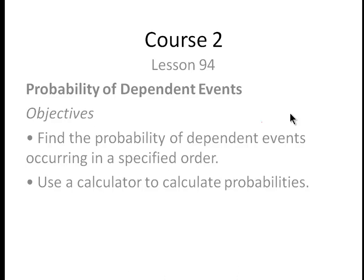Welcome to lesson 94 of Saxon Math course 2. In this lesson we're going to deal with the probability of dependent events. We're going to find the probability of dependent events occurring in a specific order and we're going to use a calculator to calculate probabilities. In our case we probably won't use a calculator, but you will learn how to use it.